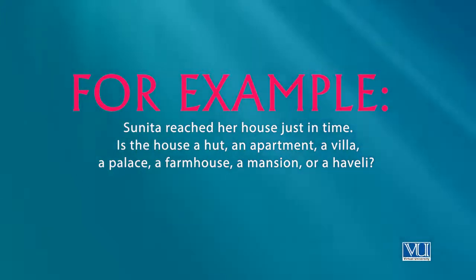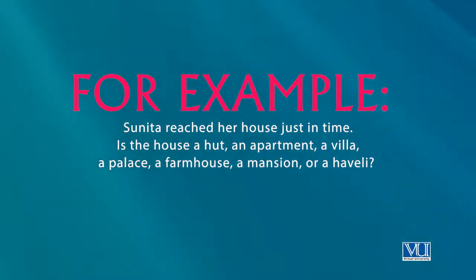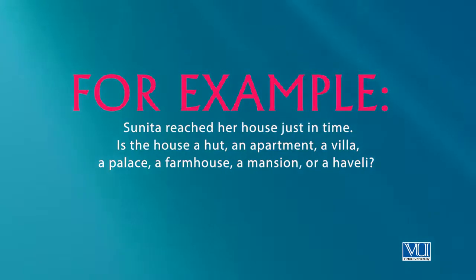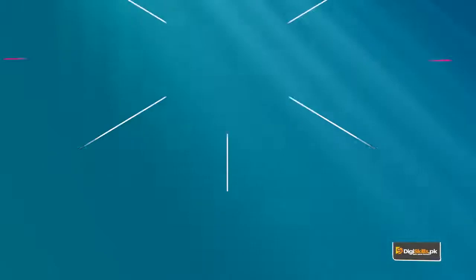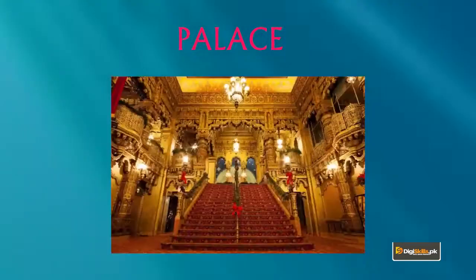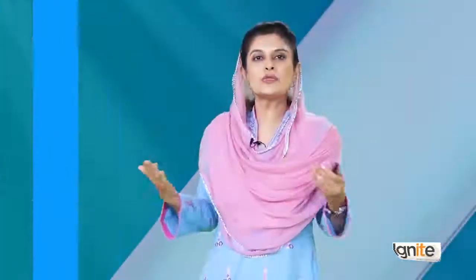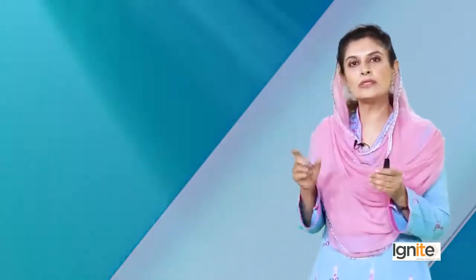You can select the exact noun that you mean — for example, for where Sunita is living, you can select the exact one. Is it a palace she's living in, or a farmhouse, or a mansion, or a haveli? We don't know — maybe Sunita is the name of a cat and the cat lives under a tree somewhere. This is what you can convey with the use of accurate nouns.